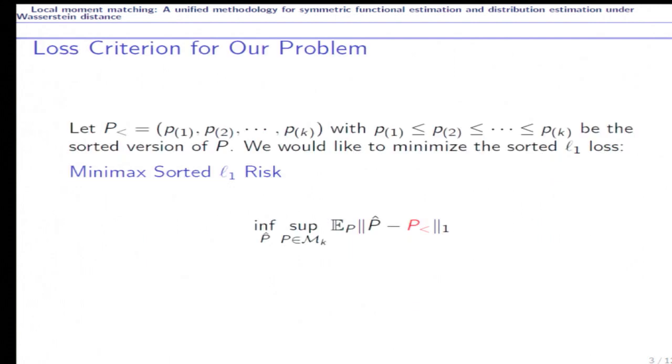Our loss criterion is as follows. Let P< be the sorted version of P. We would like to find an estimator P-hat such that the L1 distance between P-hat and P< is small. Here we are considering the minimax framework, so we'd like to consider the worst case error over all possible discrete distributions of size k. Here Mk denotes the set of probability measures supported on k elements.